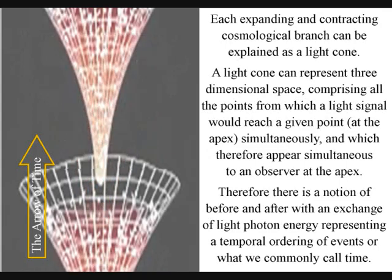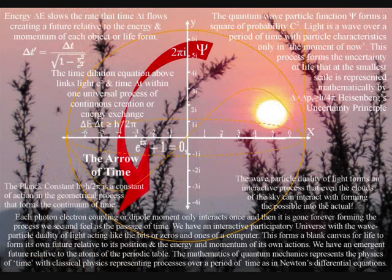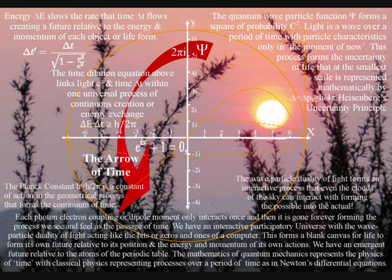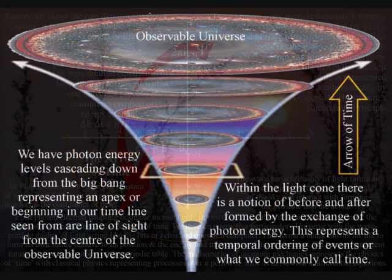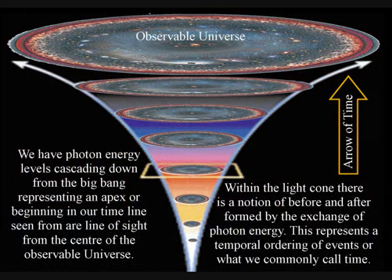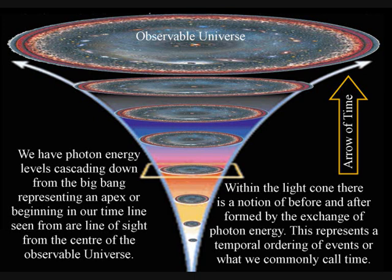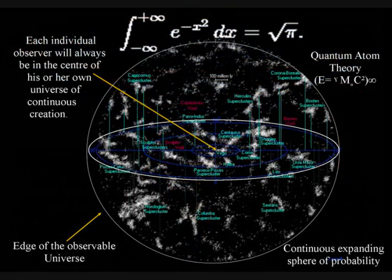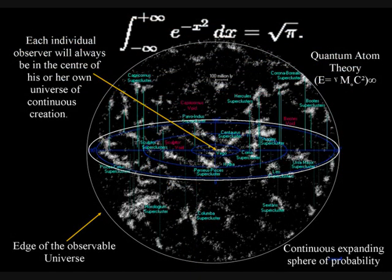Just as we have photon energy levels cascading down from the sun, we also have photon energy levels cascading down from the big bang, representing an apex, or a beginning, in our timeline, seen from our line of sight, from the center of the observable universe.